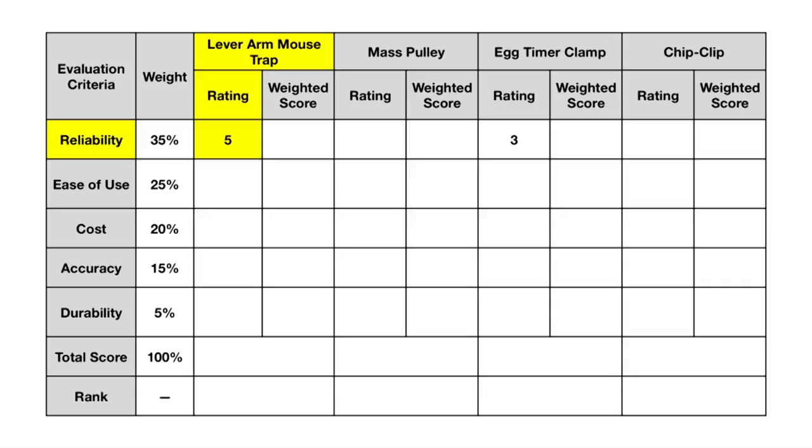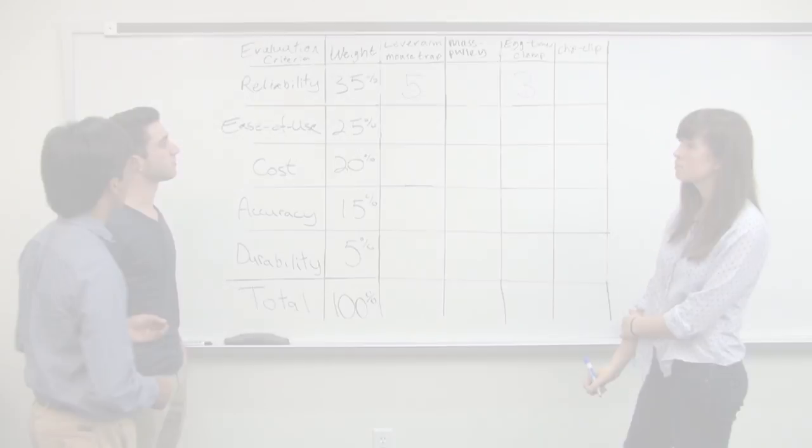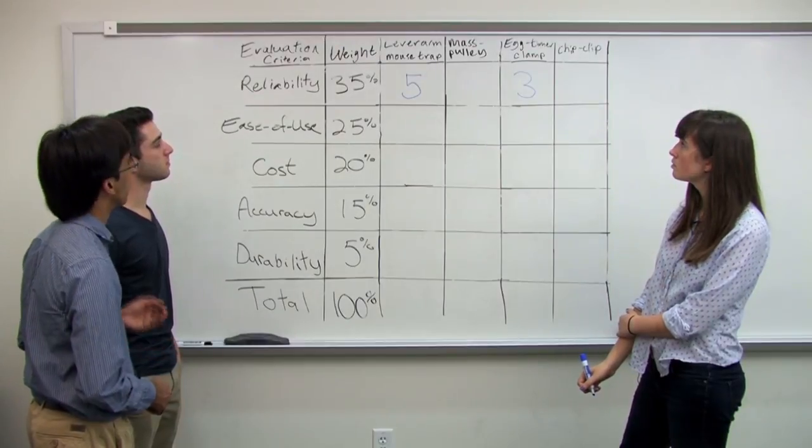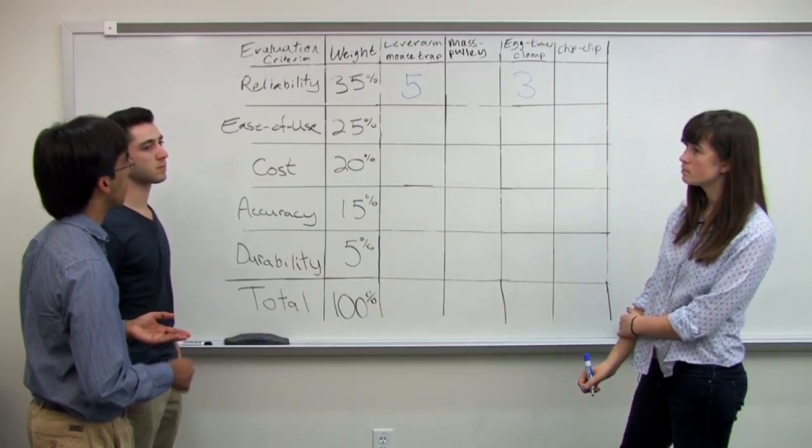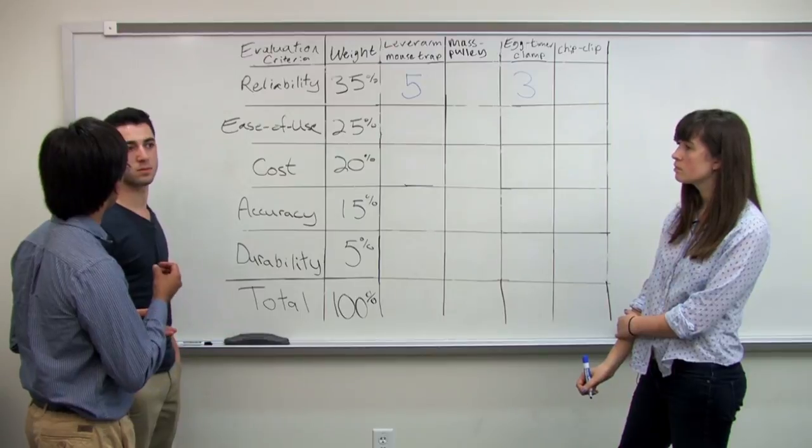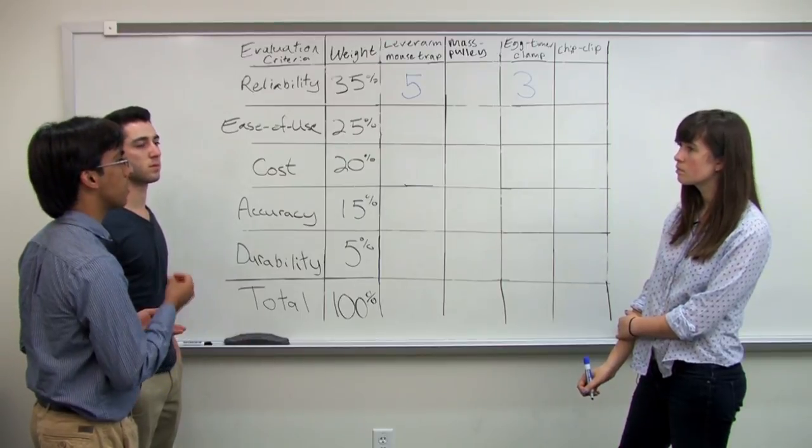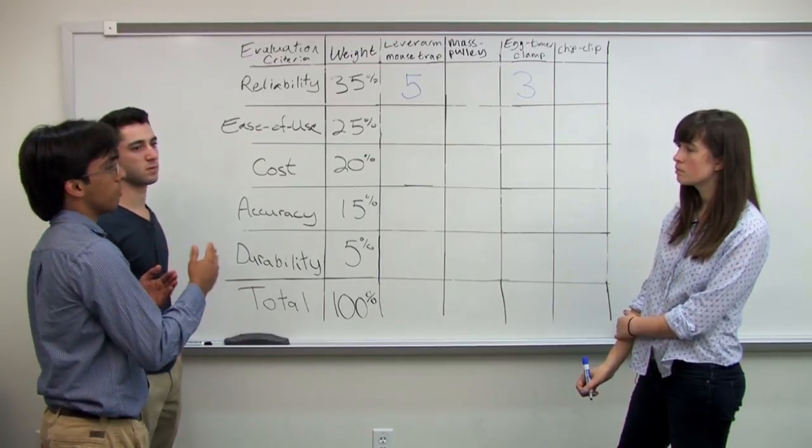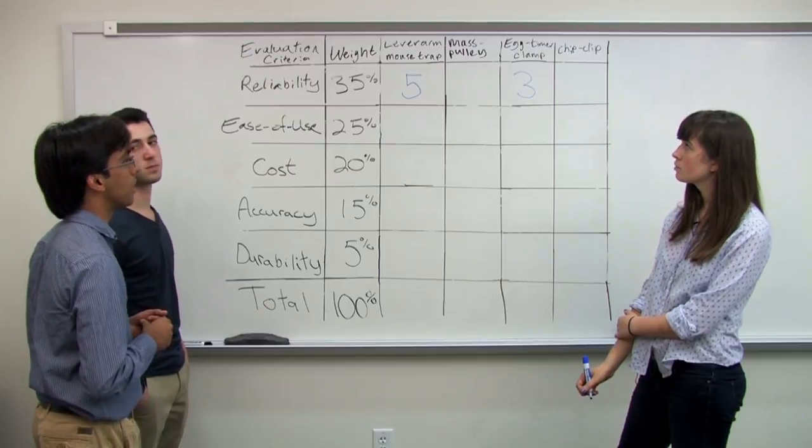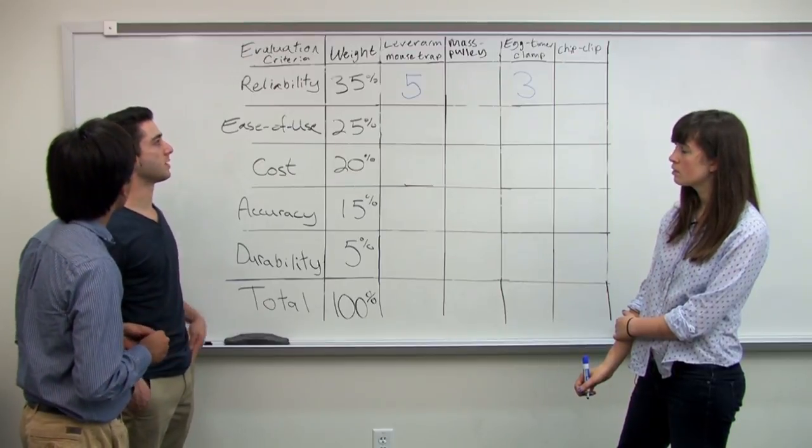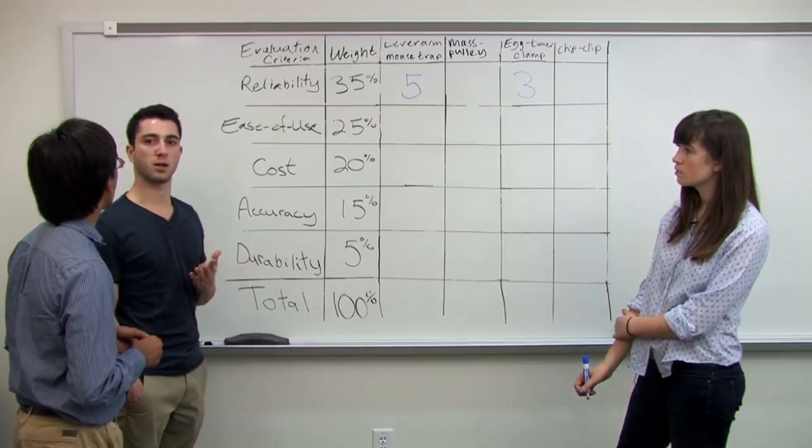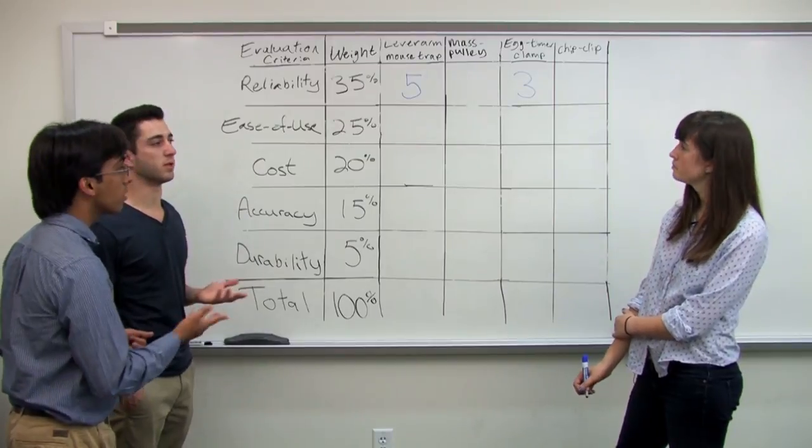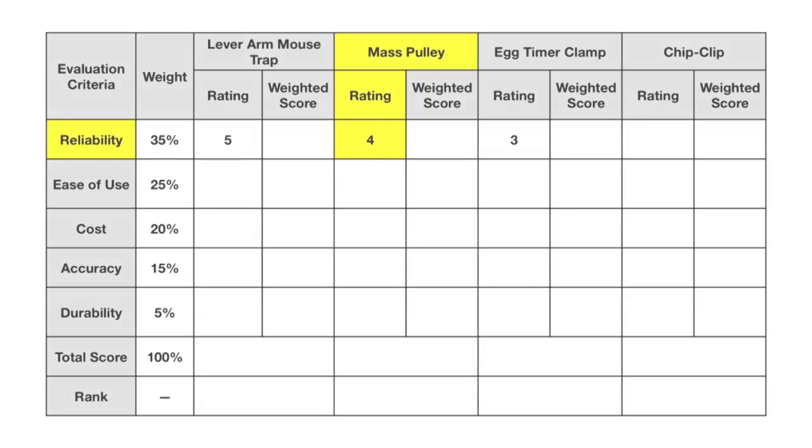A mass based pulley might function similarly, maybe perhaps slightly lower, just because you would have different weights, specific weights. So if an IV bag starts at a volume between those weights, it might not be as reliable. Also, it has a pulley in it, and pulleys can cause friction over time, not rotate the same. So maybe it's a four? Yeah.